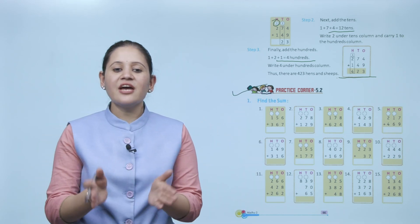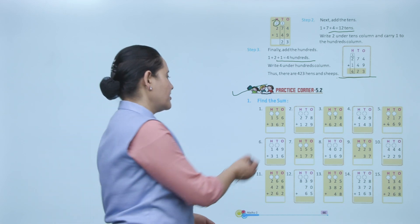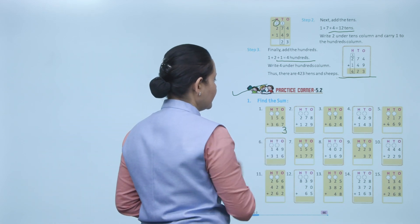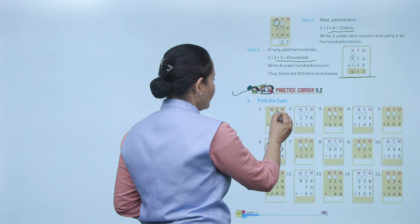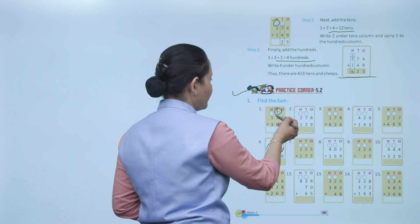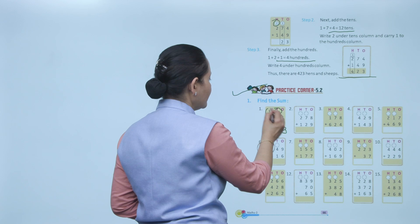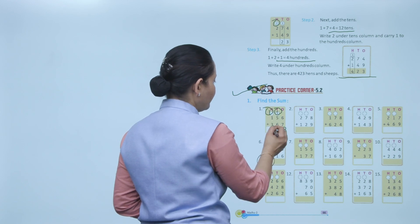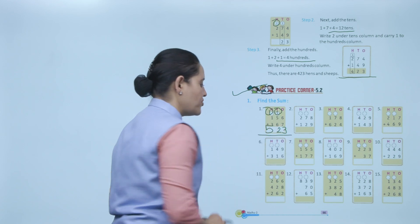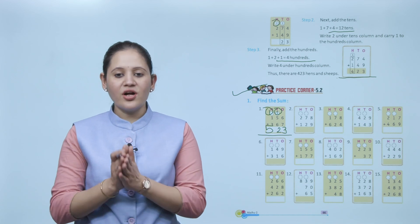Practice corner 5.2 — find the sum. We have to add 156 and 367. Ones: 7+6=13, write 3 carry 1. Tens: 6+5=11, plus 1 carried =12, write 2 carry 1. Hundreds: 3+1+1(carried)=5. The sum is 523. You have to practice all the sums.